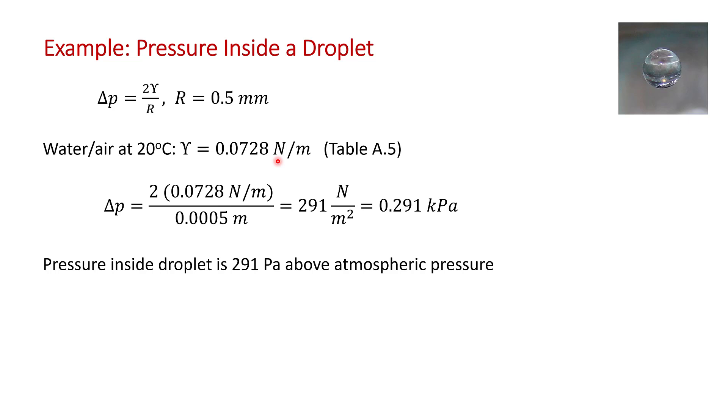Now it's just a matter of making the substitutions: 2 times the surface tension divided by the radius of the droplet, being careful to notice that's half a millimeter. You can see the units work out - newtons per meter squared is pressure. We get 291 newtons per meter squared, which is 0.291 kilopascals.